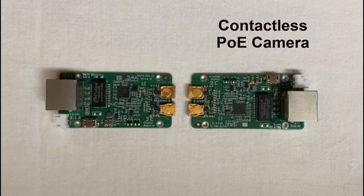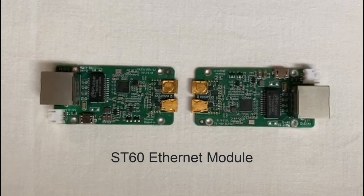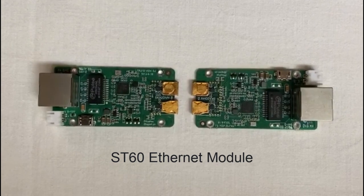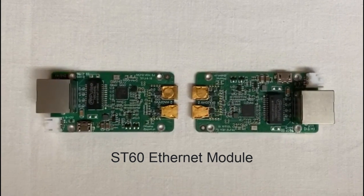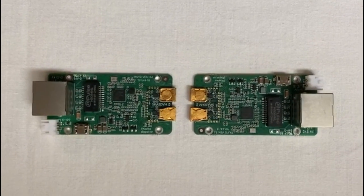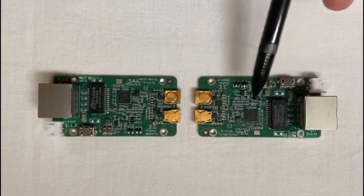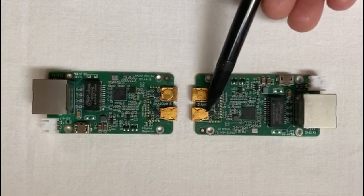This demo is based on an ethernet eval board built by a partner company EPS. The board supports a maximum of 1 Gbps ethernet speed. You will need a pair of these to create a full duplex ethernet connection. Each board comes with an RJ45 connector and SGMII to ST60 ICs and two horn antennas.